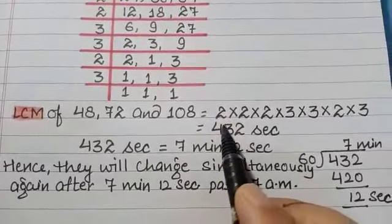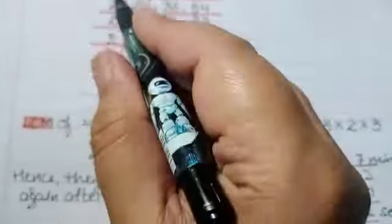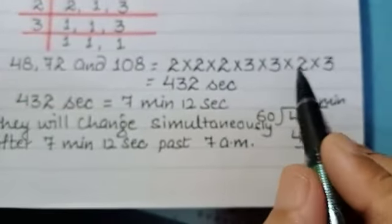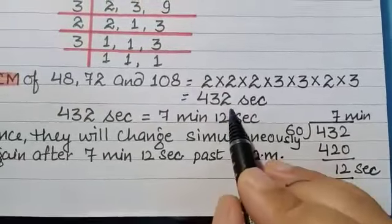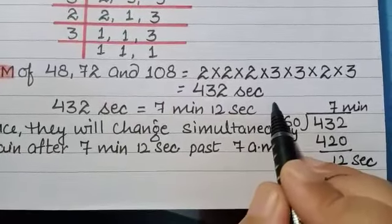So LCM of the three numbers is, we will multiply all the prime factors. On multiplying all the prime factors, the answer is 432 seconds.